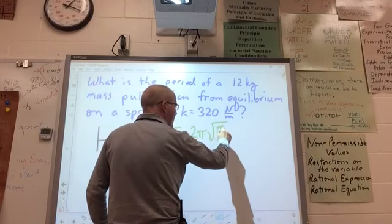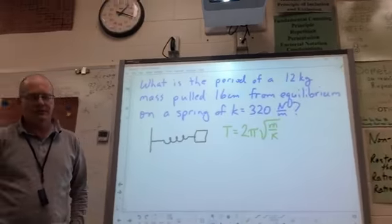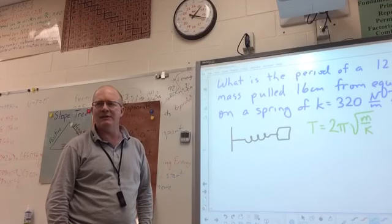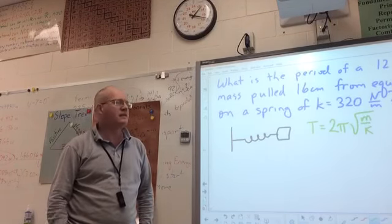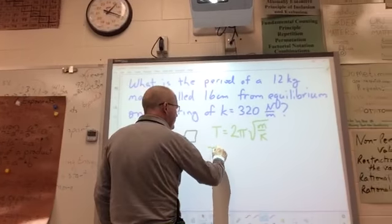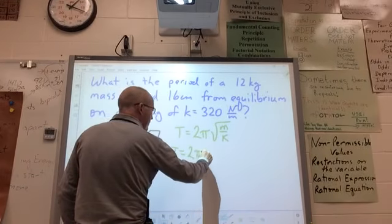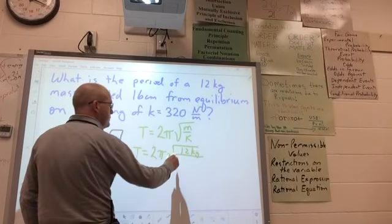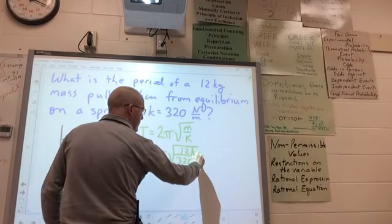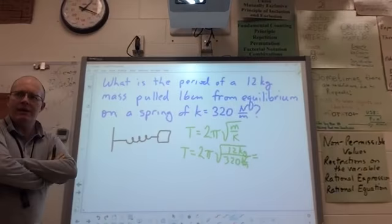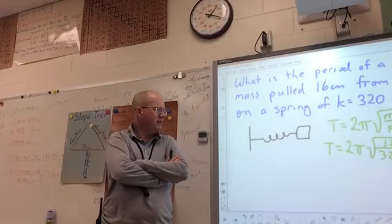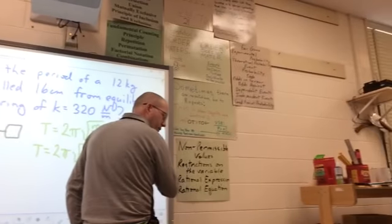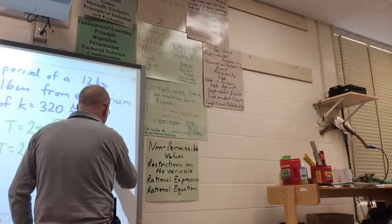What's the formula for period? T equals 2π square root of m over k. Do I memorize that? No, it's on the formula sheet. Good woman. Do we know mass? Yes. Do we know the spring constant k? Yes. So, JJ, grab your calculator and help me here. T equals what? What's my period here? 1.21 seconds.